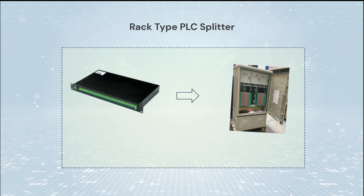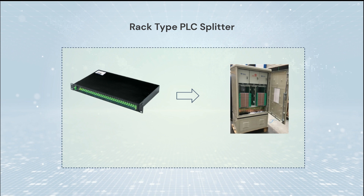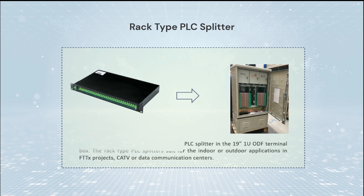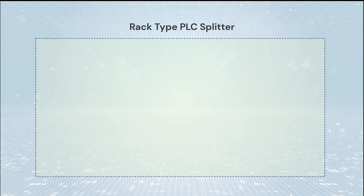The rack type PLC splitter has the PLC splitter pre-installed in a 19-inch 1U ODF terminal box. The rack type PLC splitter is suited for indoor or outdoor applications in FTTx projects, CATV, or data communication centers.